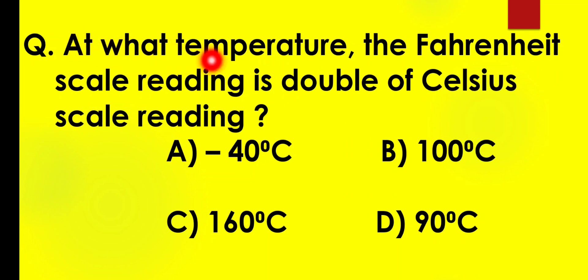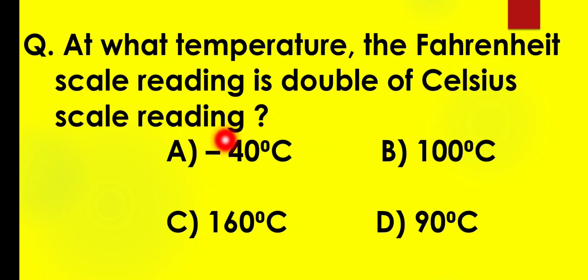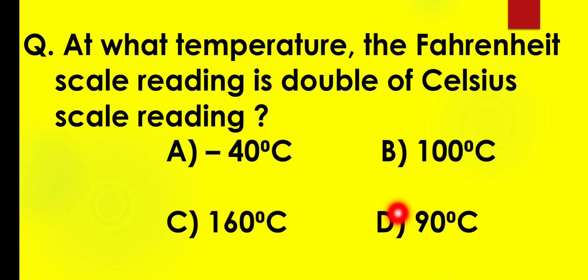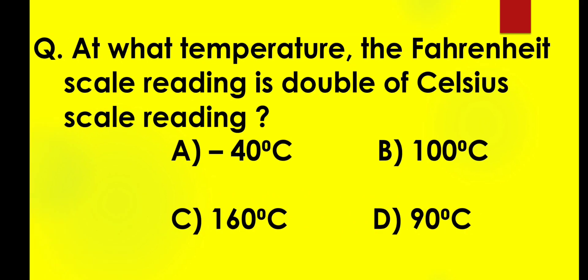At what temperature does the Fahrenheit scale reading equal double the Celsius scale reading? The options are: A) minus 40°C, B) 100°C, C) 160°C, D) 90°C. Since the Fahrenheit scale reading is double of the Celsius scale reading, we will use the formula.